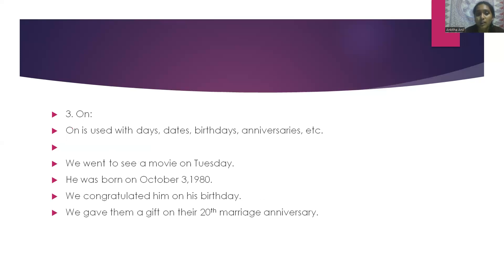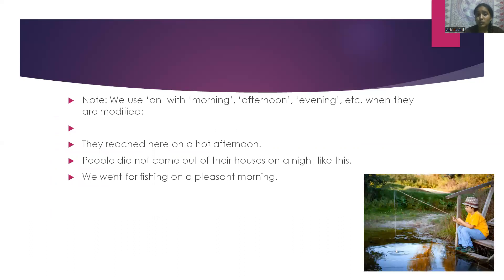The next word is 'on'. On is used with days, dates, birthdays, anniversaries, etc. For example: we went to see a movie on Tuesday. He was born on October 3rd, 1980. We congratulated him on his birthday. We gave him a gift on their 20th marriage anniversary. Note: we use 'on' with morning, afternoon, evening when they are modified. For example: they reached here on a hot afternoon. People did not come out of their houses on a night like this.